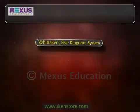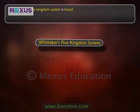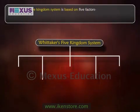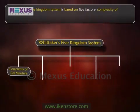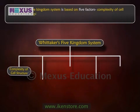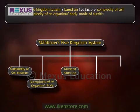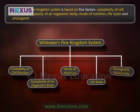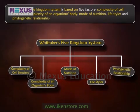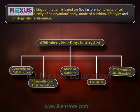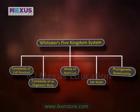Whittaker's five kingdom system is based on five factors: complexity of cell structure, complexity of an organism's body, mode of nutrition, lifestyles, and phylogenetic relationships. Let's understand these five factors one by one.